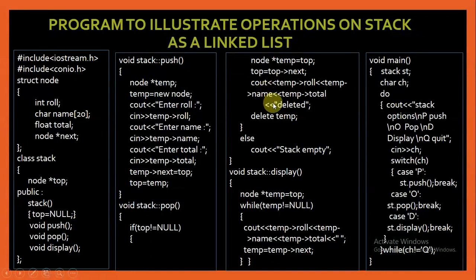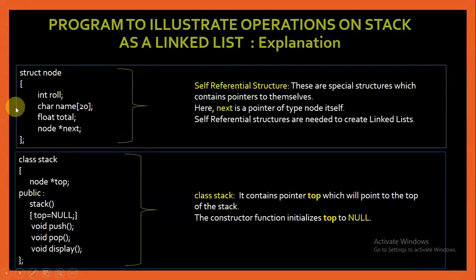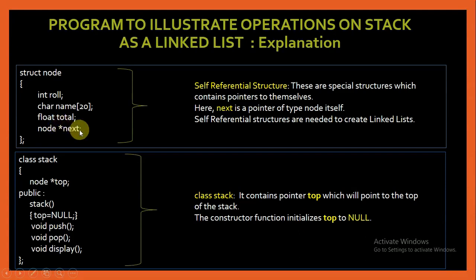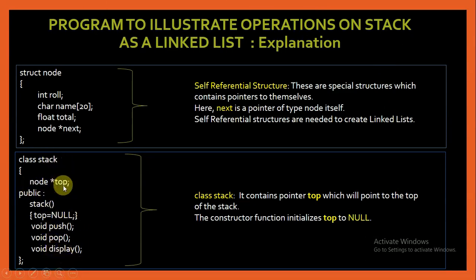Let us understand the memory depiction of this diagram to make it more clear. The struct node is a self-referential structure — special structures which contain pointers to themselves. This structure contains members: role of type int, name of type char[20], and total of type float. And then there is a pointer next with a star symbol, whose type is the type of the structure itself — node. So this is a self-referential structure, and self-referential structures are used to create linked lists. In the class stack, I am creating a pointer top which will point to the top of the stack, of type node, initialized to null in the constructor. Then there are three functions: push, pop, and display.